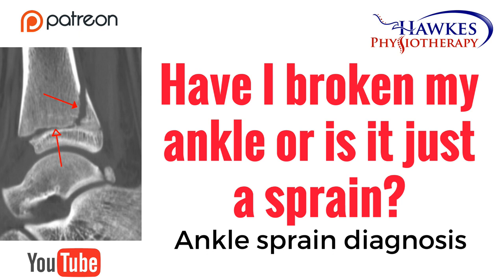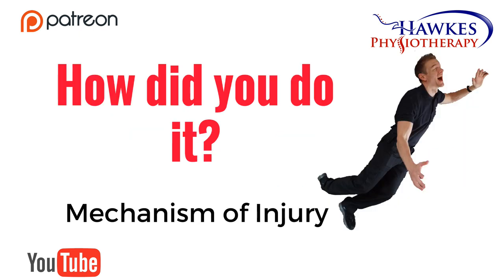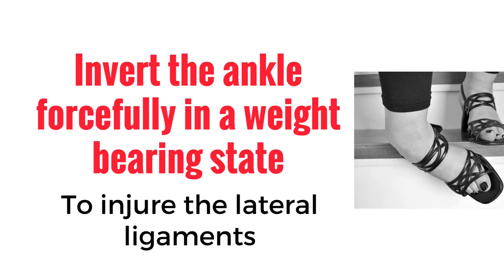So how do you diagnose a lateral ankle sprain? According to Pulitzer et al. 2012, the way that you injured it is important to understand what injury you have sustained — this is called the mechanism of injury. To injure the lateral ligaments, you usually need to invert the ankle forcefully in a weight-bearing state.